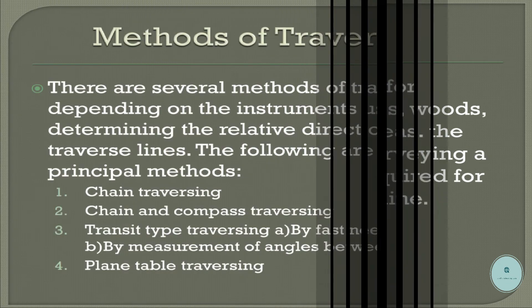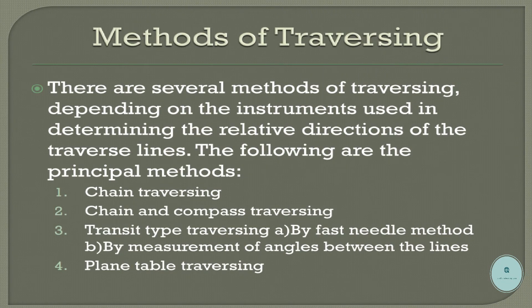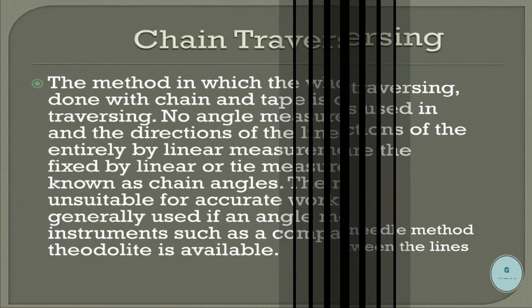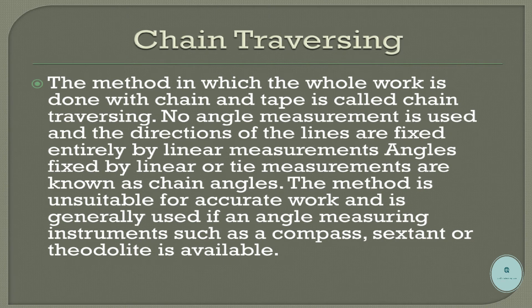Methods of traversing: there are several methods of traversing depending on the instruments used in determining the relative directions of the traverse lines. The following are the principal methods: chain traversing, chain and compass traversing, transit type traversing, and plane table traversing.